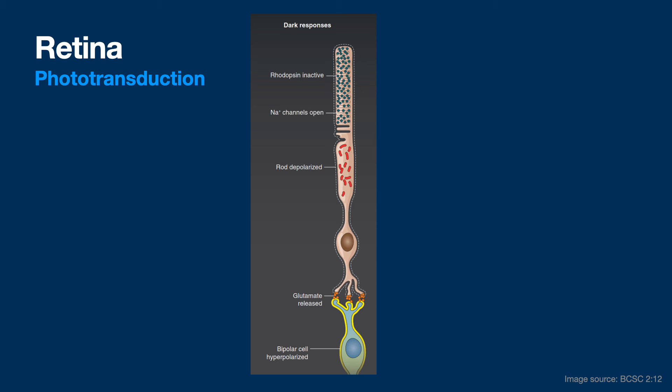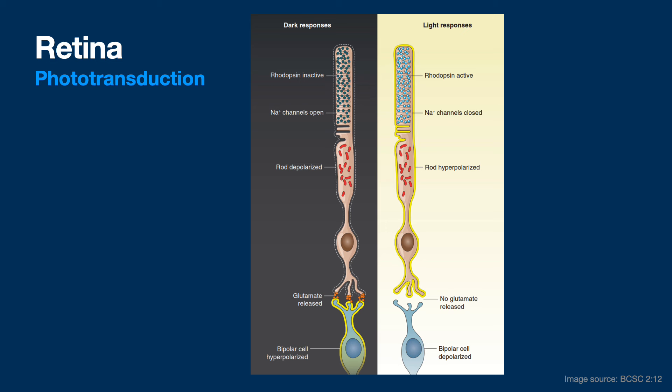Looking at a retina in the dark: rhodopsin is inactive, sodium channels are open so sodium comes in, and the rod is depolarized — releasing glutamate, which hyperpolarizes the bipolar cell so it does nothing. When light comes in, rhodopsin gets activated, triggering a chain of events that results in the sodium channels closing. The rod hyperpolarizes, stops releasing glutamate, and stops telling the bipolar cell to stop — so the bipolar cell is then depolarized and activated.